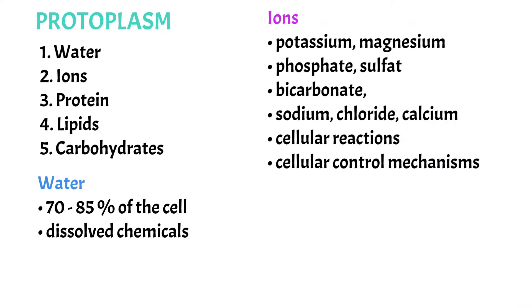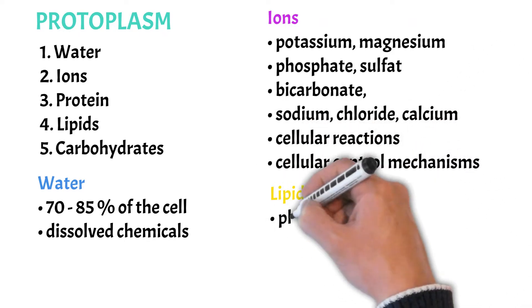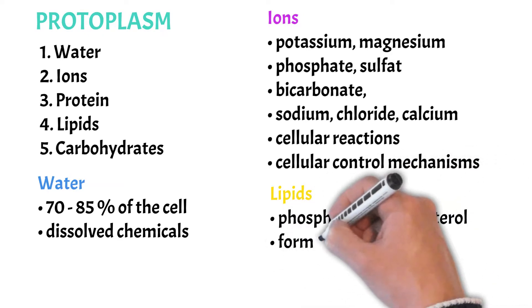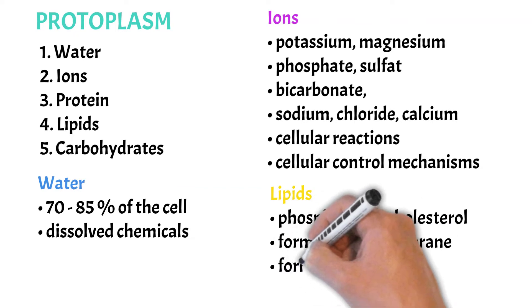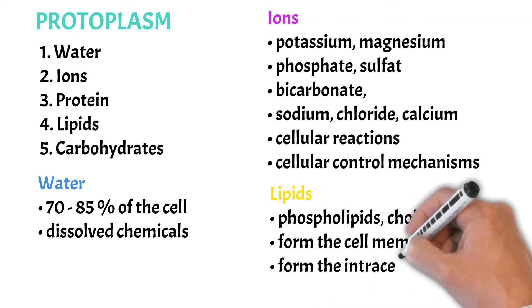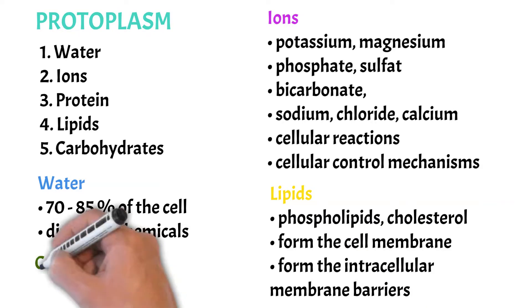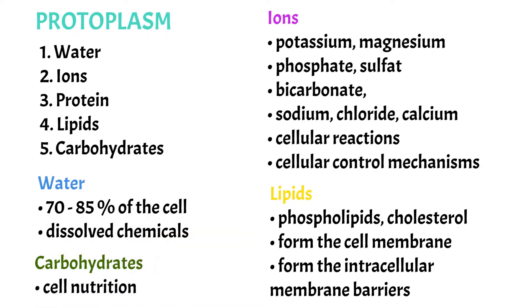Now let's take a look at lipids. The most important lipids are phospholipids and cholesterol which are used to form the cell membrane and intracellular membrane barriers that separate the different cell compartments. And then we have carbohydrates that are used for the cell nutrition.